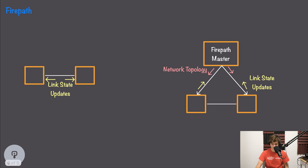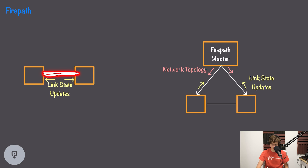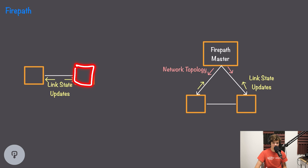Traditional routing protocols like OSPF or ISIS transfer link state updates between independent switches. Two switches with traffic flowing between them connect using OSPF, send keepalives, and notify each other when a link goes down, allowing each switch to calculate available paths. At the scale of Google's data center — with a huge number of switches and paths — the overhead of these protocols might be too much.